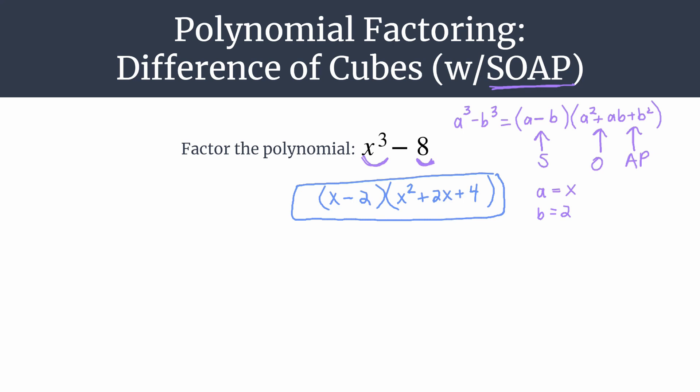If you want to double check yourself, multiply these polynomials quickly to confirm that you do get back that x cubed minus 8. So we'll do that quickly in green. We have x cubed plus 2x squared plus 4x. Then using the minus 2, we have minus 2x squared minus 4x minus 8.